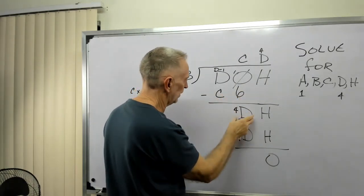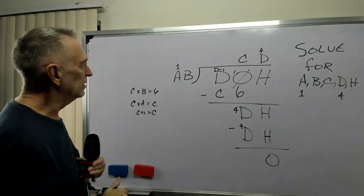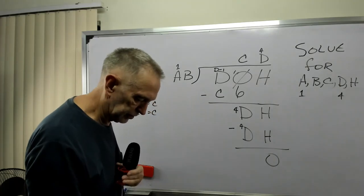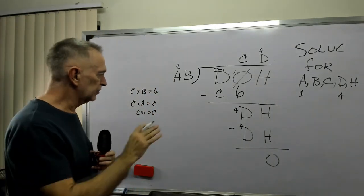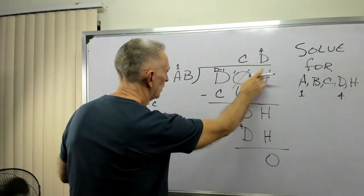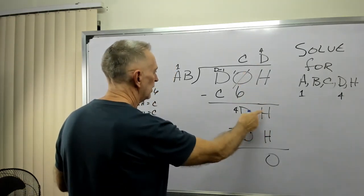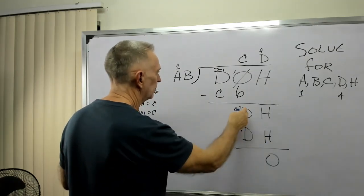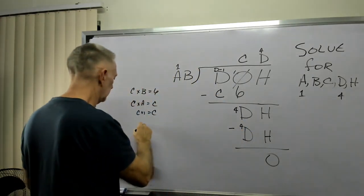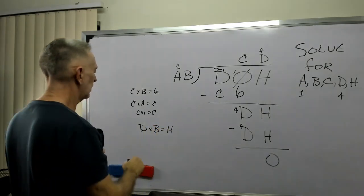We finished here. We would have this D. We would bring the H down. Where did this DH come from? We had D times B is H. Well, that's another clue. D times B equals H.